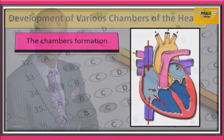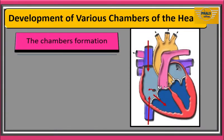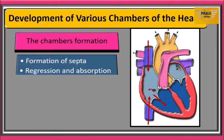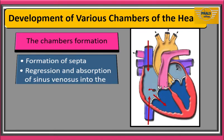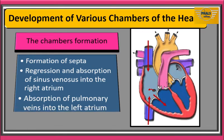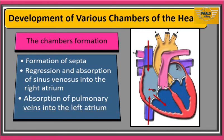Let's go to class. The formation of a definitive heart with four chambers from the primitive heart tube with a single lumen is achieved through the following processes: 1. Formation of septa. 2. Regression and absorption of sinus venosus in the right atrium. 3. Absorption of pulmonary vein in the left atrium. 4. Incorporation of bulbus cordis into the primitive ventricle. 5. Cavitation.